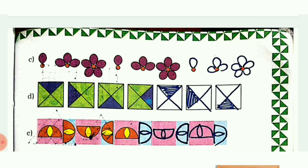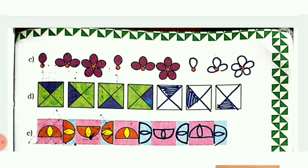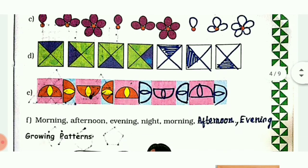The next one is a color pattern. See the blue color - it is getting repeated. First the blue color is at the top, then it moves to the left side, then it rotates to another triangle, then it shifts to the right side - in this way the pattern continues. The next one has a design that is getting rotated.